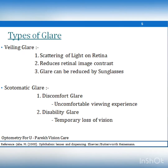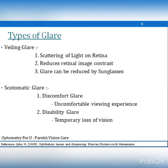Glare is broadly classified into two types: veiling glare and scotomatic glare. Veiling glare occurs when light is scattered over the retina, reducing the contrast of the retinal image and reducing detailed perception. Veiling glare usually increases with age due to the formation of cataract, reducing the transparency of the crystalline lens. Protection from veiling glare is provided with the help of sunglasses and a brimmed hat.